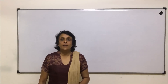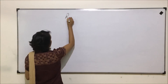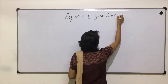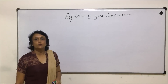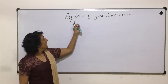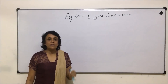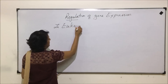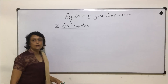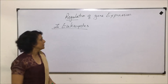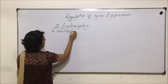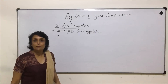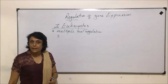In this video we'll talk about regulation of gene expression — how the expression of genes is regulated. This regulation mechanism is different in eukaryotes and prokaryotes. In eukaryotes, this regulation can take place at multiple levels, and there are several steps at which expression can get regulated.